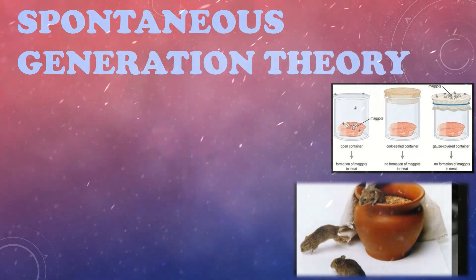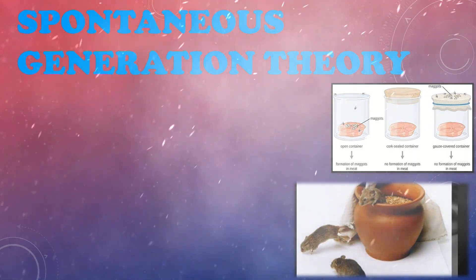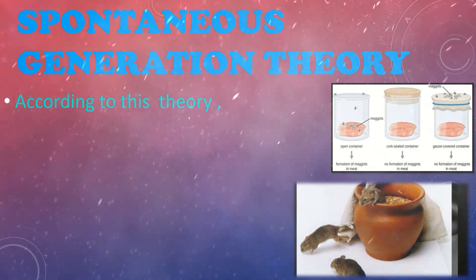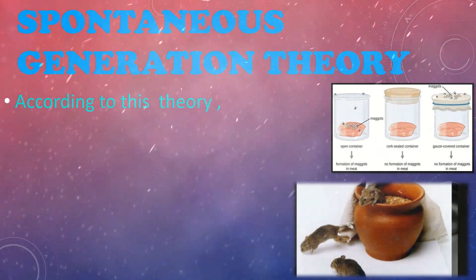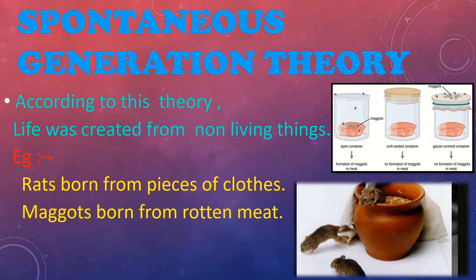Now, about the Spontaneous Generation Theory. According to this theory, life was created from non-living things such as these examples: rats born from pieces of clothes, maggots born from rotten meat, and worms born from decayed roots.